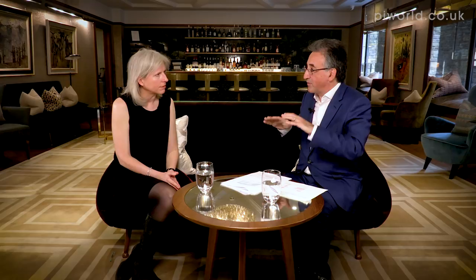The measures I like: return on equity is a very well-known measure. In the case of BioVentix it's 48.5%; YouGov, just on its reported numbers, is at 14.3%. It's ironic that YouGov retained more of its profit than BioVentix — BioVentix retained only 10% and distributed 90% last year, whereas YouGov was about 50-50. But on every pound retained by YouGov, they're generating a much lower return on equity than BioVentix.